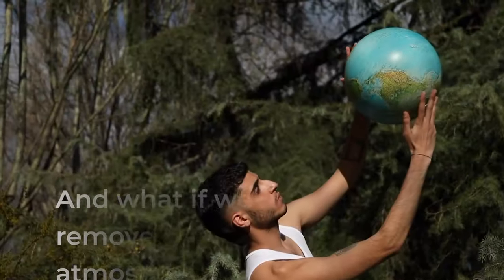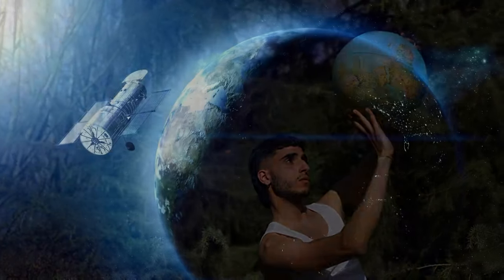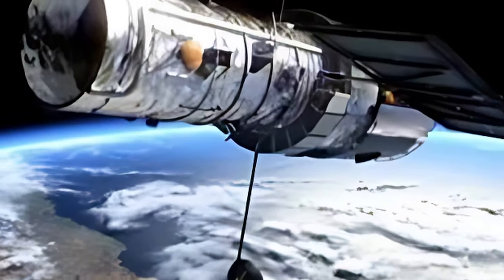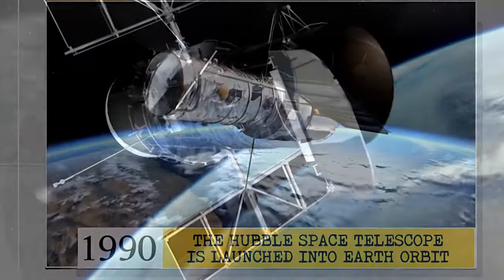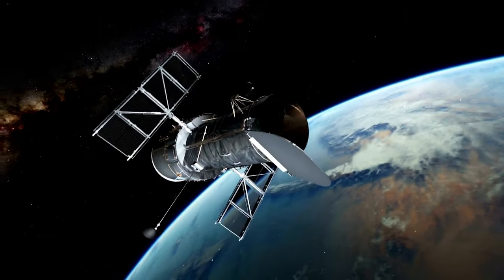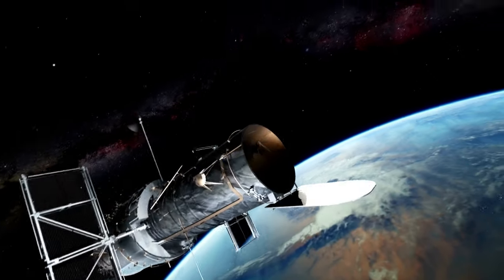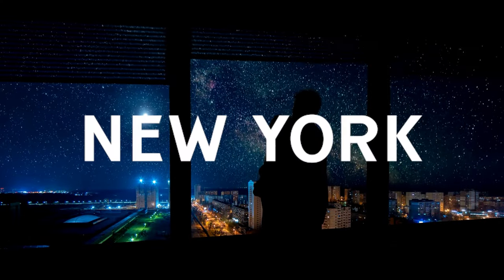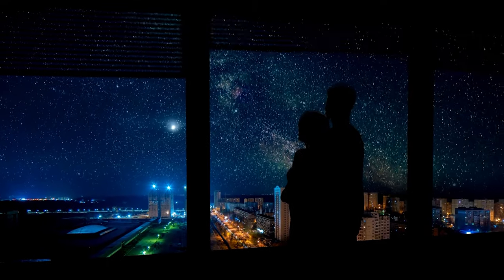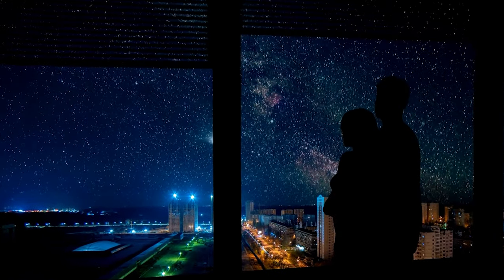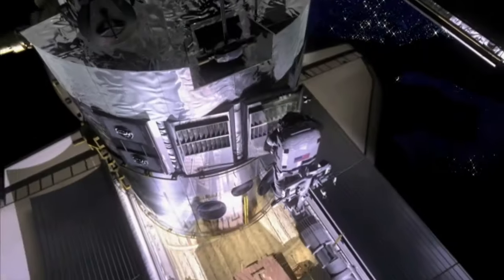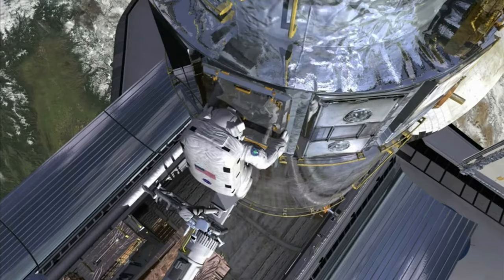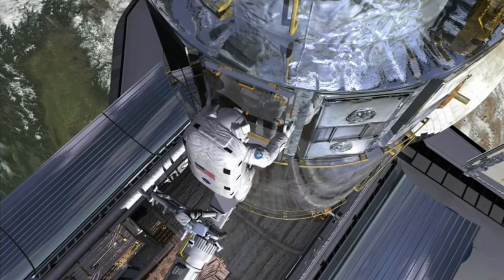And what if we remove the atmosphere altogether? Well, that's where space telescopes come into play. Launched in 1990, the Hubble Space Telescope orbits our planet beyond the atmosphere's grasp, capturing images with unparalleled precision. Imagine you are standing in New York City, and you want to spot a firefly flickering in the night sky over Tokyo. It sounds impossible, but that's precisely the level of accuracy and detail that the Hubble Space Telescope achieves in its cosmic observations.